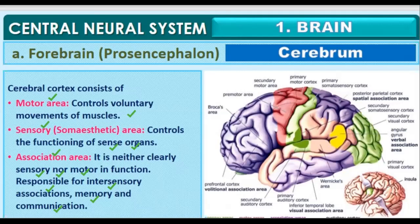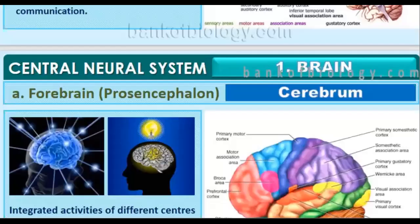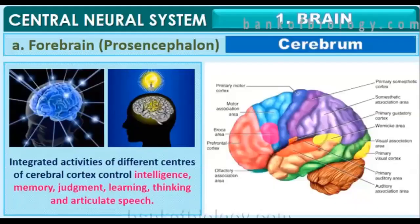Intelligence, memory, judgment, learning, thinking, and articulate speech are all regulated with the help of the cerebral cortex.